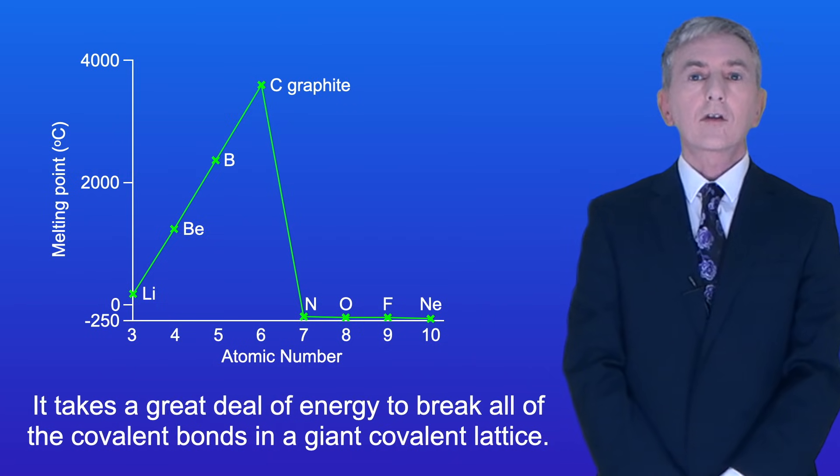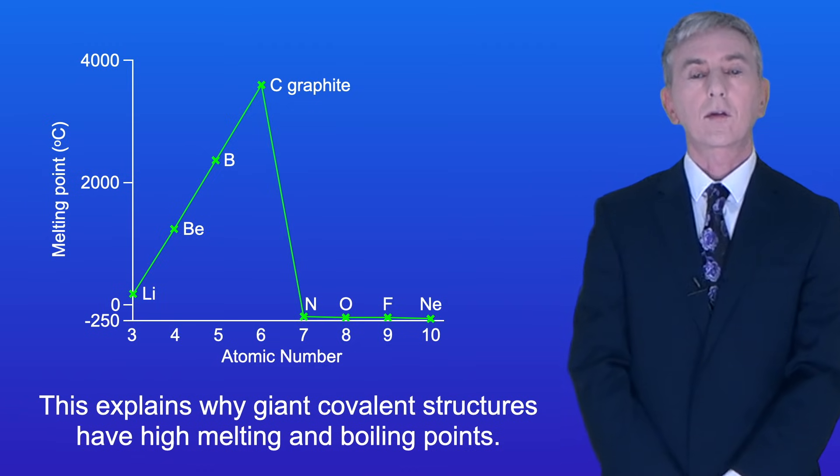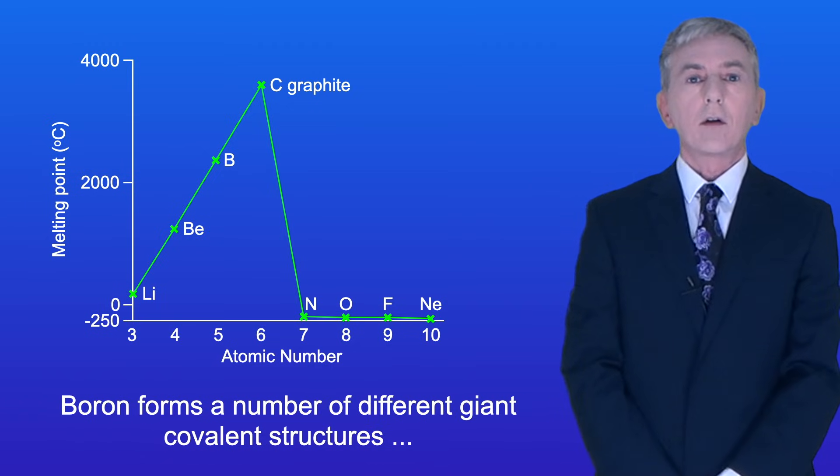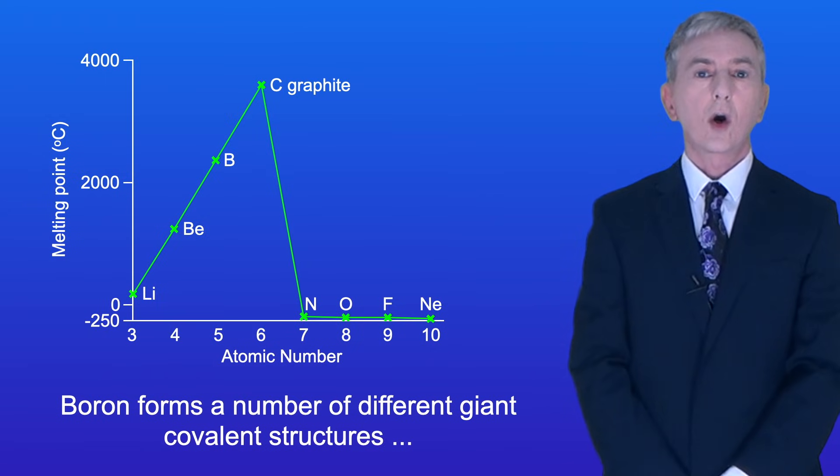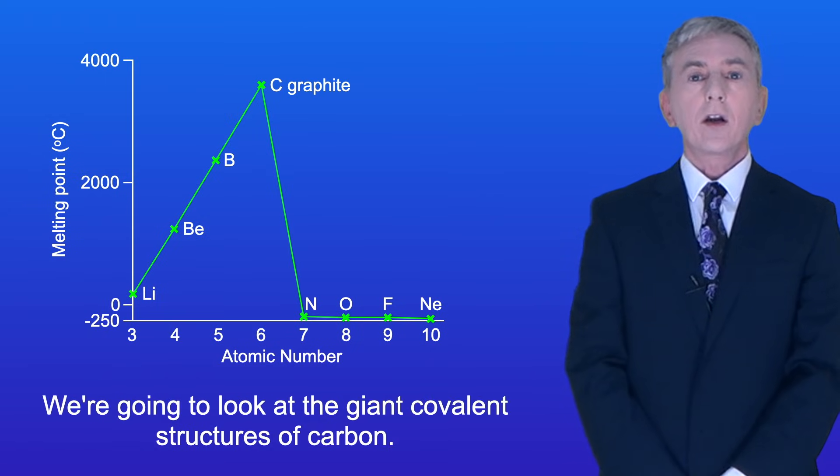It takes a great deal of energy to break all of the covalent bonds in a giant covalent lattice and this explains why giant covalent structures have high melting and boiling points. Now boron forms a number of different giant covalent structures which you're not required to know. We're going to look at the giant covalent structures of carbon.